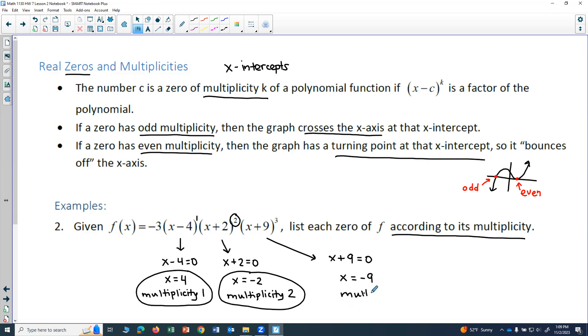To get the multiplicity, I look at the exponent on that factor. So this one would be multiplicity 3. So that finds the zeros and the multiplicities.